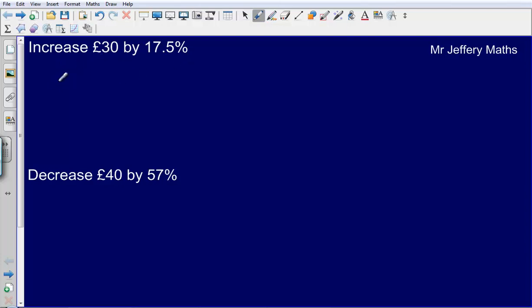So first of all, increase £30 by 17.5%. The first thing that I'm going to do here is I'm going to find out what 10% of my amount is. So 10% of my amount, my amount is £30. To find 10% I simply have to divide my amount by 10. So that gives me £3.